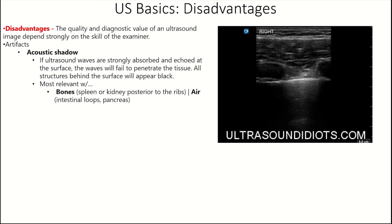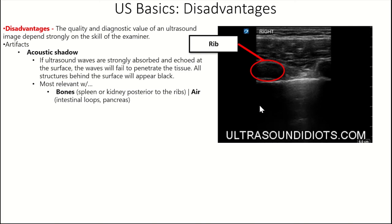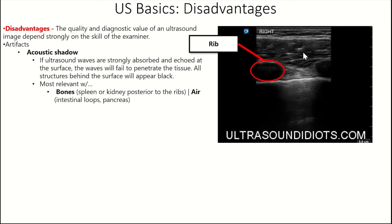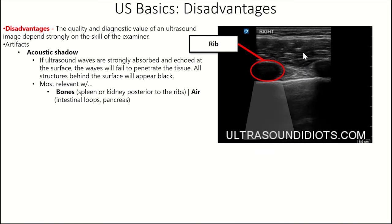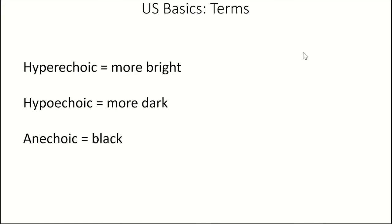To depict acoustic shadowing, in this video on the right we can see some ribs, and that large anechoic area behind them where we don't see much is the acoustic shadow. Make sure you fan around these things to get a clear image of what you need to see. Some basic terms: hyperechoic means more bright, hypoechoic means more dark, and anechoic means black.